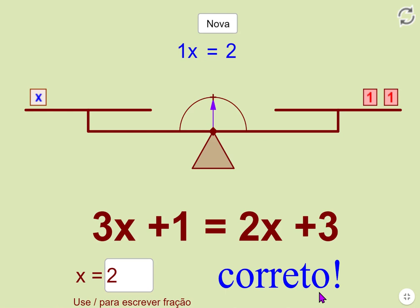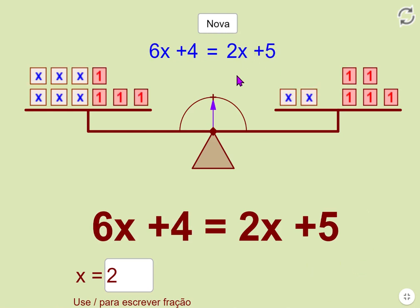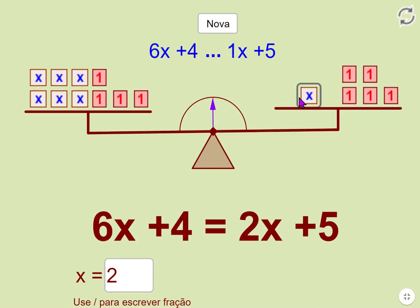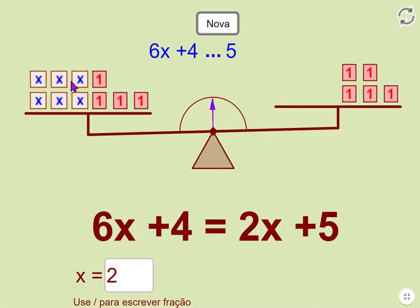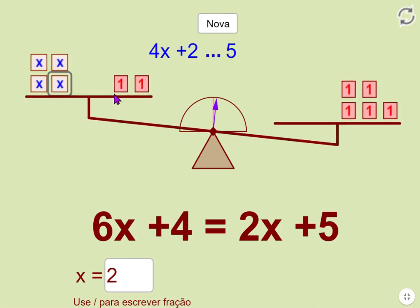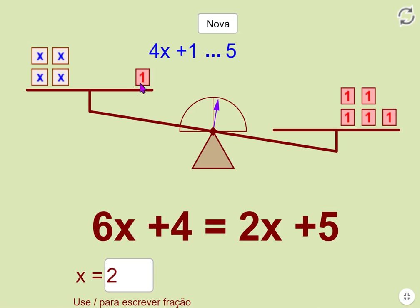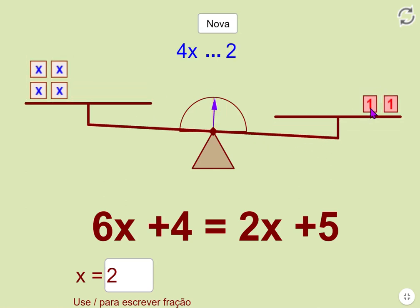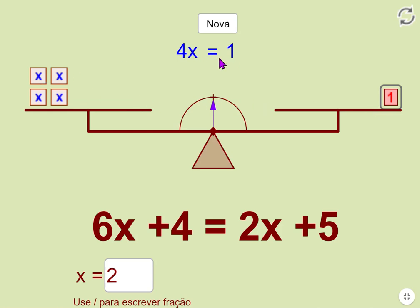We'll do another one, much more quickly. Take 2 from the right, take 2 from the left - any 2x's. Take 4 from the right, take 4 from the left. Now we know that 4x equals 1.